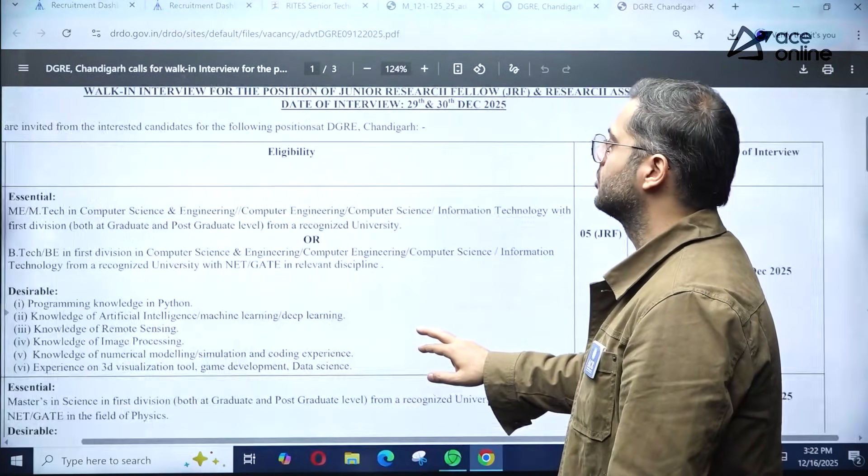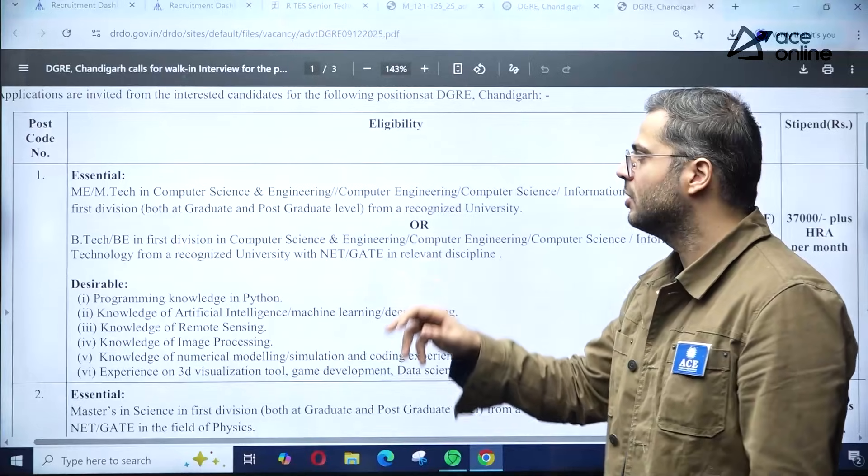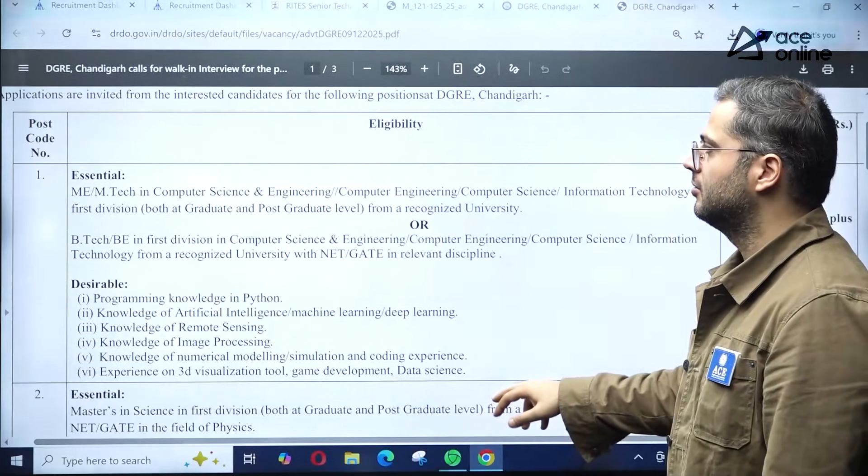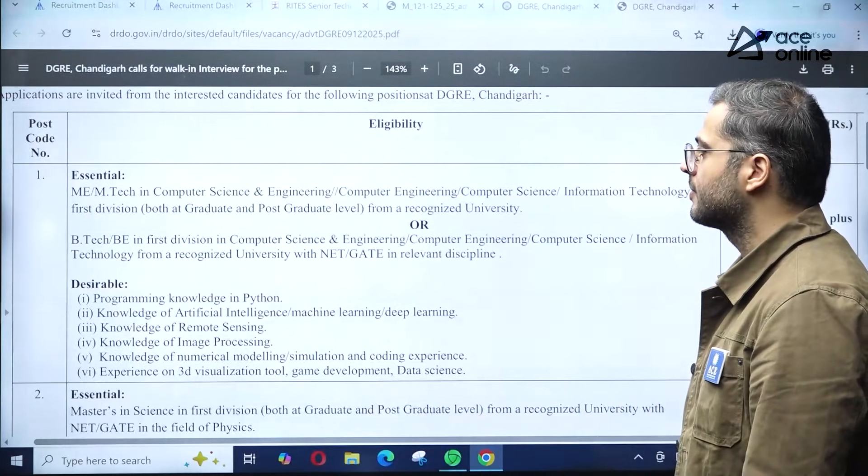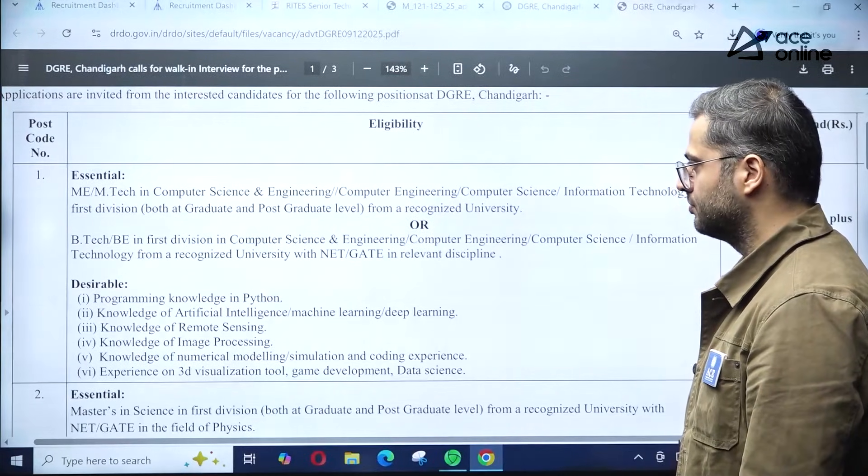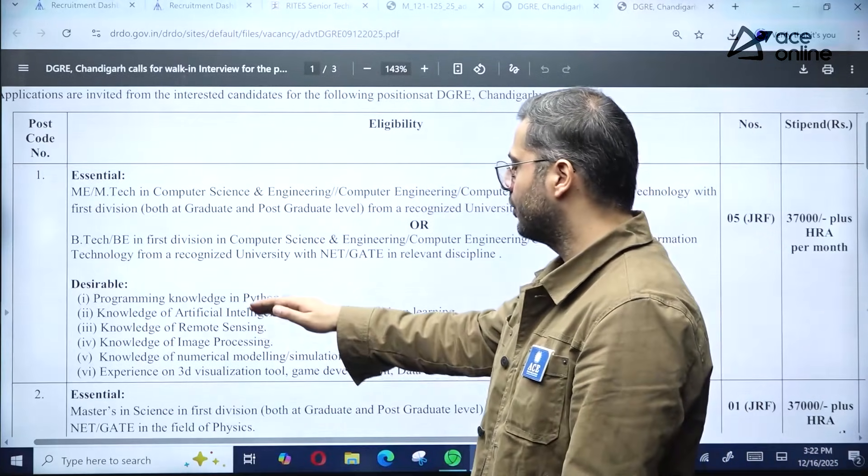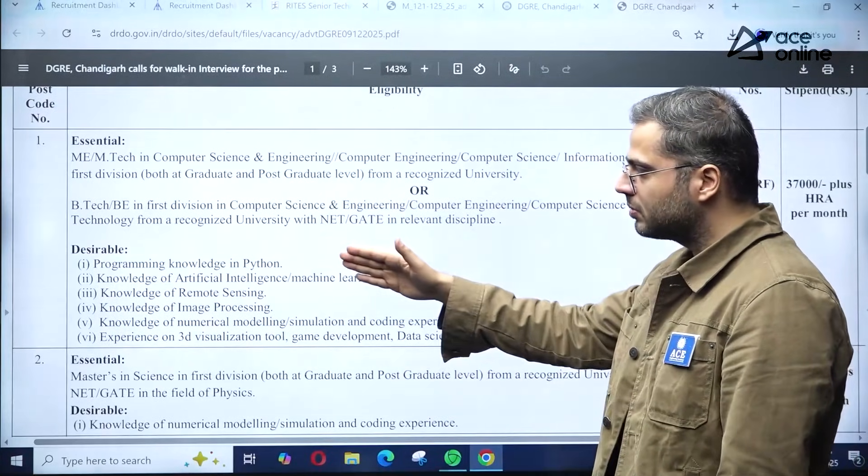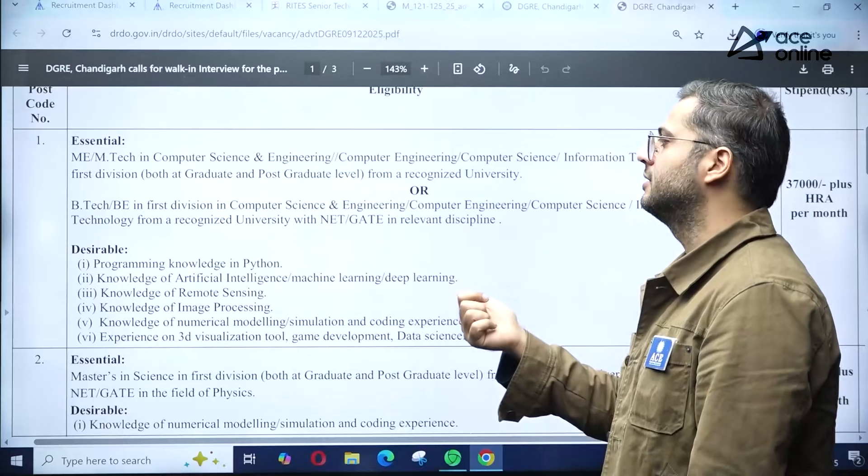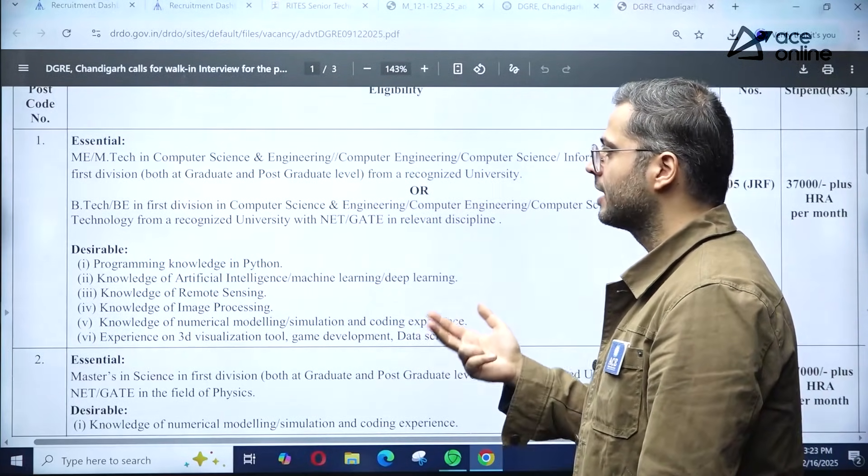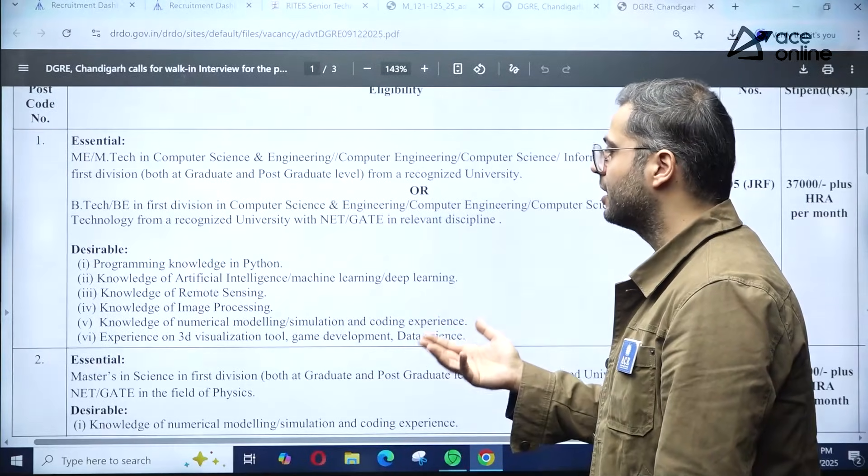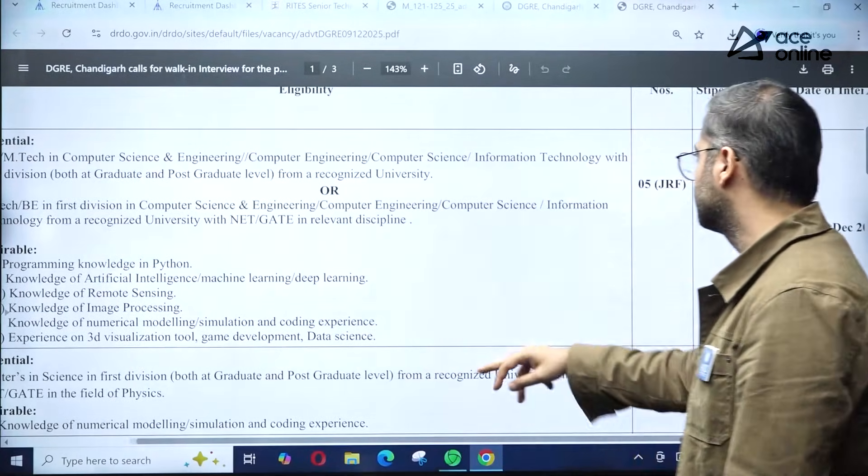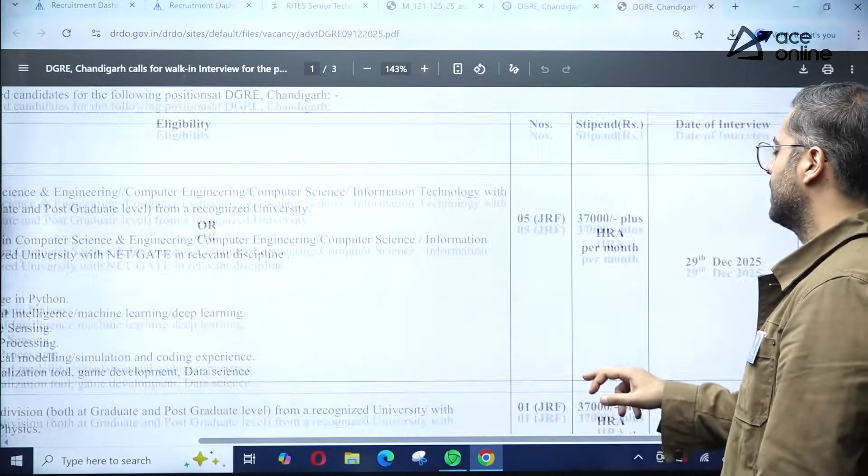First, essential qualifications for Computer Science students: M.Tech in Computer Science or Computer Engineering, or B.Tech in first division with a valid GATE score. For M.Tech, GATE is not required; for B.Tech, GATE is required. Desirable knowledge includes programming in Python, AI, machine learning, deep learning, remote sensing, image processing, numerical modeling, simulation, coding experience, 3D visualization tools, game development, and data science. Five JRF positions are available at 37,000 plus HRA per month. Interview date is 29 December 2025.